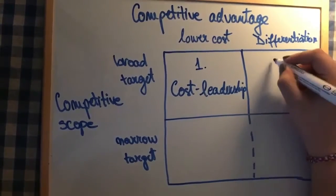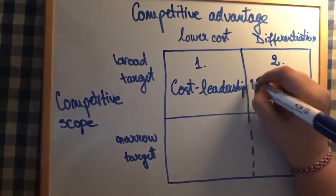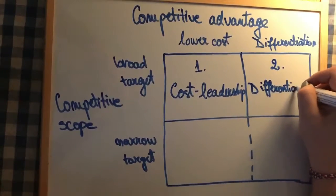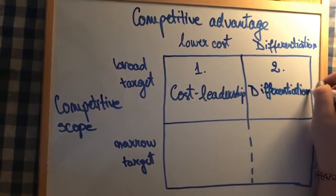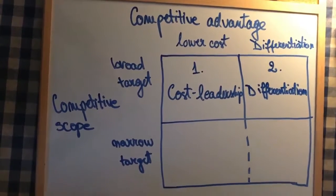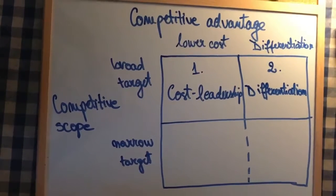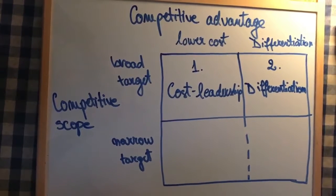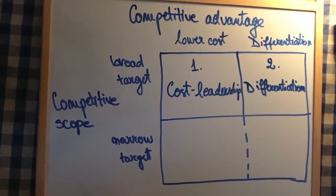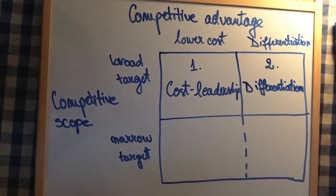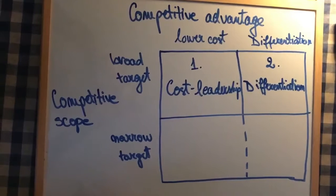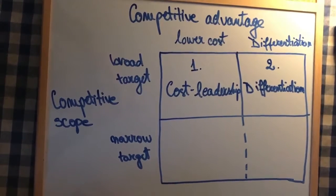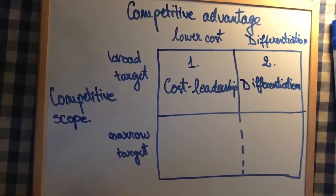The second strategy is the differentiation strategy. This strategy involves uniqueness along some dimension that is sufficiently valued by customers to allow a price premium. This strategy deals with four types. First, product and service attributes — they need to be really good and really different from their competitors. Then you have customer relationships — they really need to maintain a good customer relationship in order to produce their products.